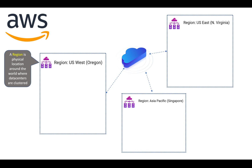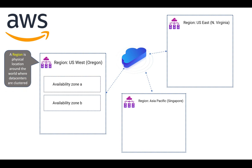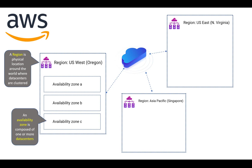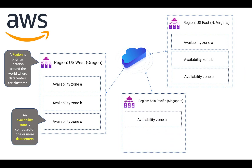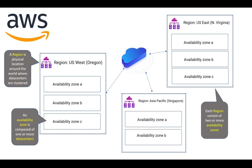The region is the main physical location, and inside the regions you will have different availability zones — it can be two, three, or four availability zones, depending on the location. An availability zone is composed of one or more data centers. So inside a region you have availability zones, and each availability zone is composed of multiple data centers. In general in AWS, all regions will have a minimum of two availability zones for high availability.